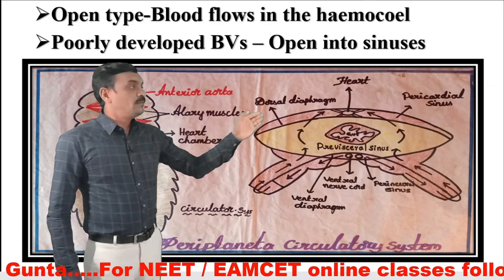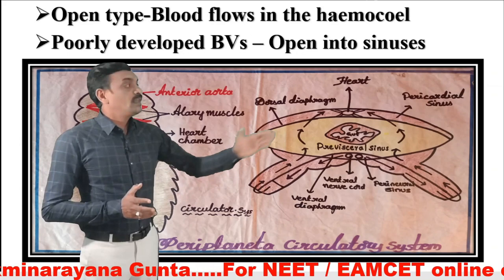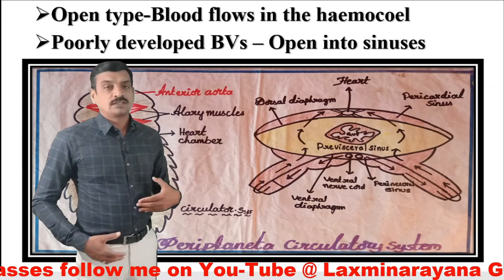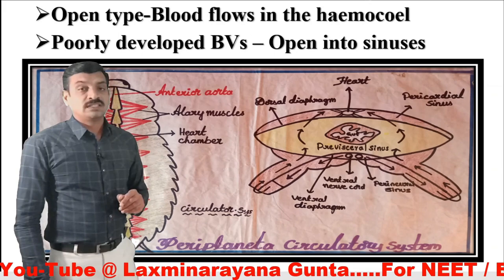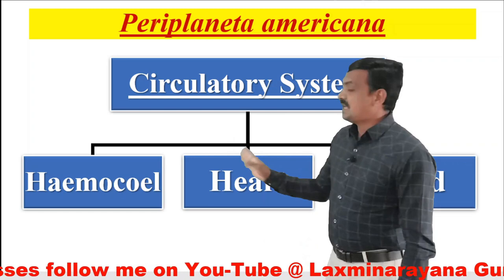The blood flows in the hemocoel and the blood vessels are poorly developed because the blood opens into sinuses. In this diagram you can observe the blood is flowing in sinuses. This sinus is called the hemocoel — 'hemo' means blood, 'coel' means cavity. We humans have highly developed blood vessels whereas cockroaches have poorly developed blood vessels.